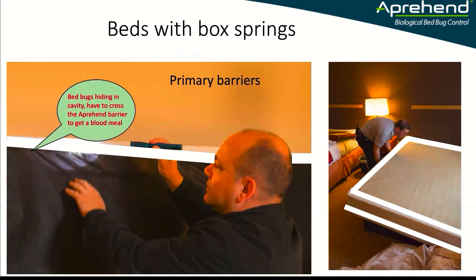If we've got box springs, it's the same thing. We can put primary barriers around the stapled area where the dust cover is attached to the frame of the box spring. This means that any bed bugs inside that cavity or lodging between the staples of that dust cover have to cross a barrier when they emerge from their harbourage. We'll also place perimeter barriers around the side perimeter of the box spring and around the top perimeter before replacing the mattress, ensuring any bed bugs infesting the box spring have to cross a barrier to get to the blood meal.